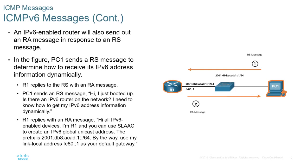PC1 sends an RS message: 'I just booted up. Is there an IPv6 router on the network? I need to know how to get my IPv6 address information dynamically.' R1 replies with an RA message: 'Hi, all IPv6-enabled devices. I'm R1. You can use SLAAC to create an IPv6 global unicast address. The prefix is [prefix]. Use my link-local address of FE80::1 as your default gateway.'